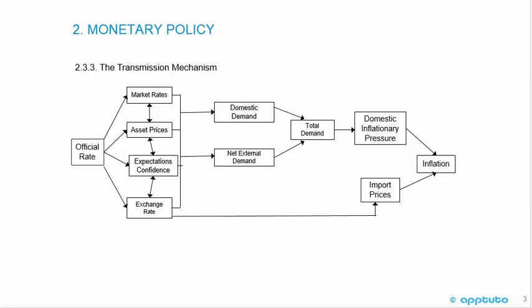There is a whole range of interconnected ways in which a rise in the central bank's policy rate can reduce real domestic demand and net external demand — that is the difference between export and import consumption. Weaker total demand would tend to put downward pressure on the rate of domestic inflation, as would a stronger currency, which would reduce the price of imports. Taken together, these might begin to put downward pressure on the overall measure of inflation.